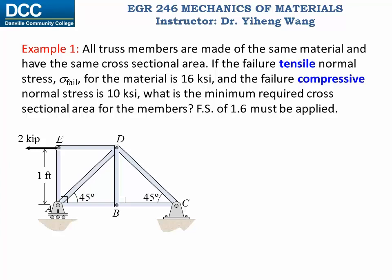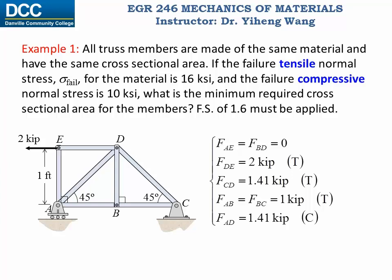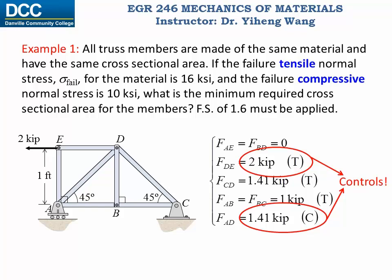We learned how to solve for truss loadings in statics, so I won't repeat the process here. If you are not sure how to do that, you need to review statics before moving on. The results are shown here — T stands for tensile loading and C stands for compressive loading. Since all truss members have the same cross-sectional area, the larger the loading, the larger the stress. The maximum tensile and compressive loadings will control the area, but we don't know which one will govern, so we will calculate for both situations and compare the results.